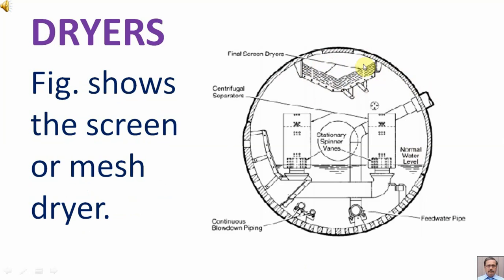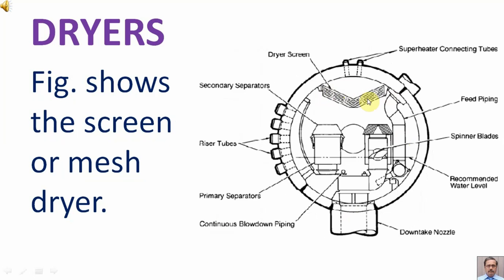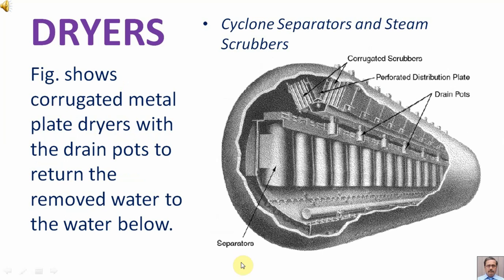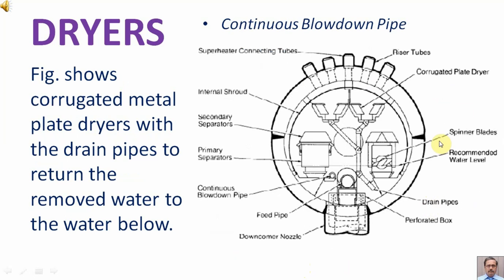Figure shows the screen or mesh dryer. Figure shows corrugated metal plate dryers with the drain pipes to return the removed water to the water below.